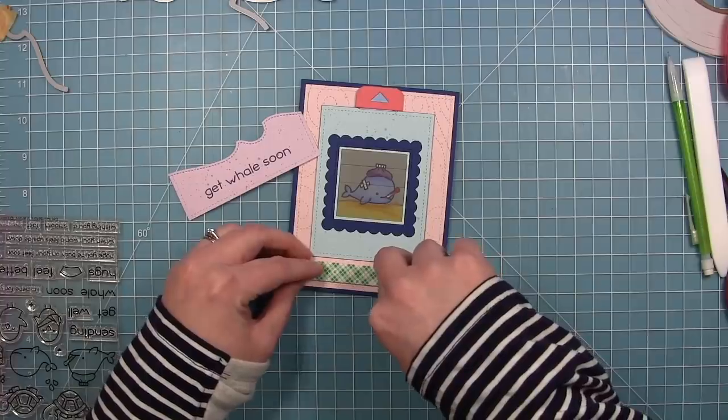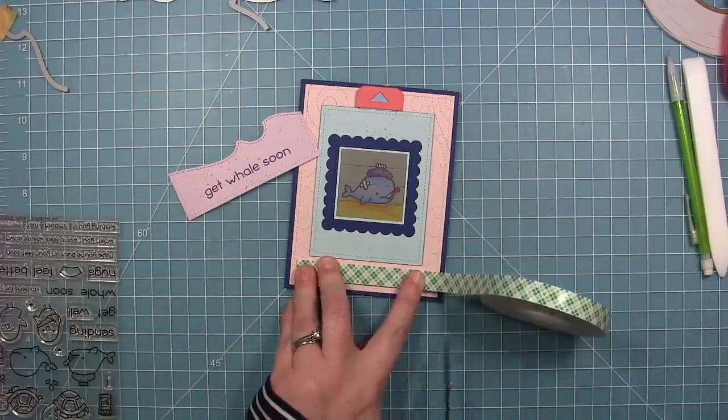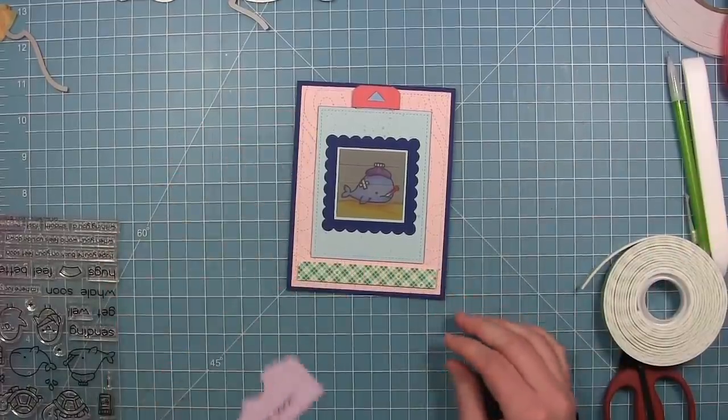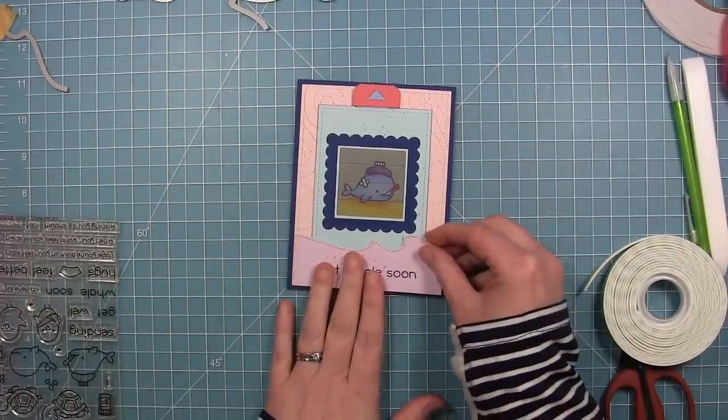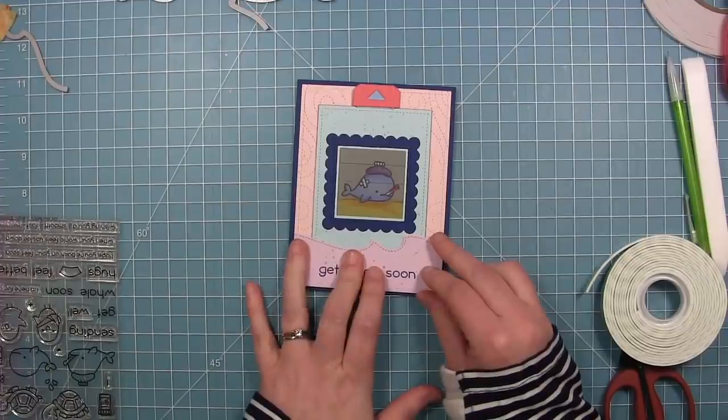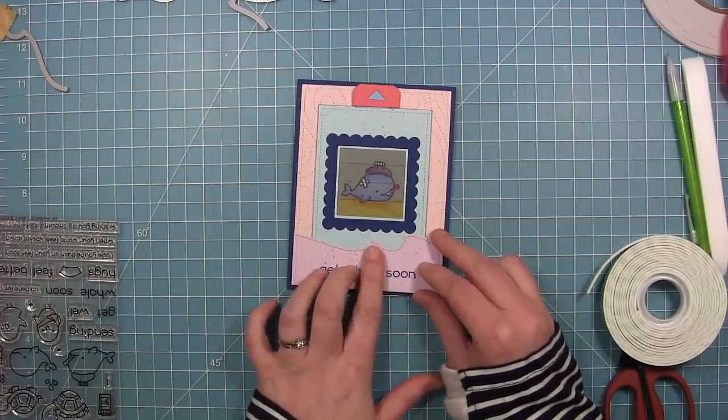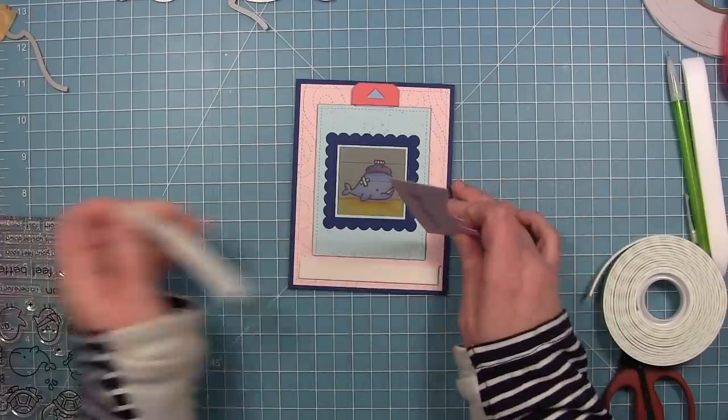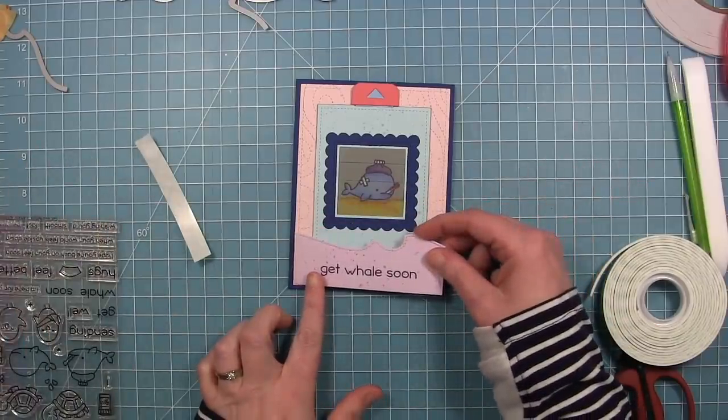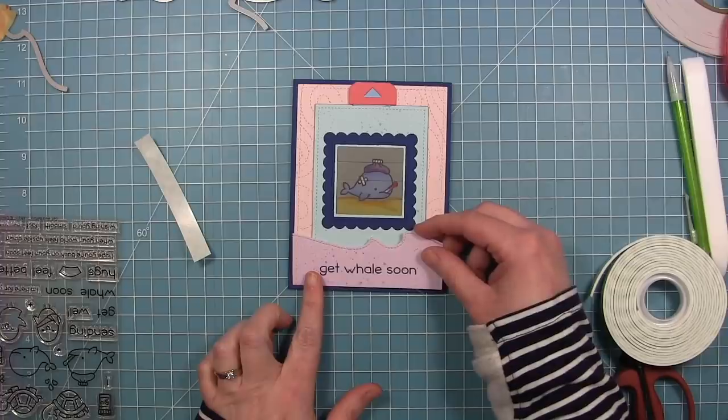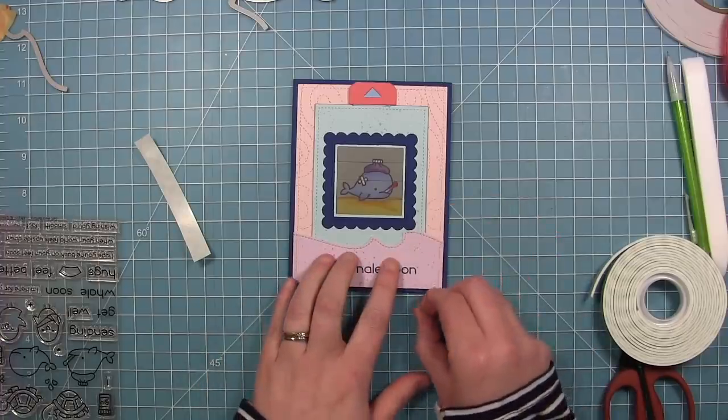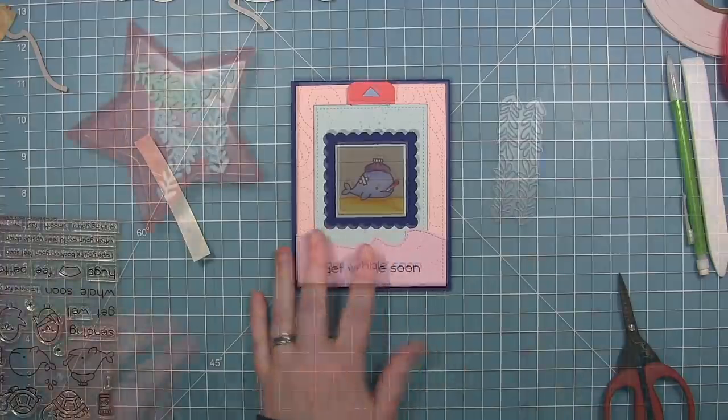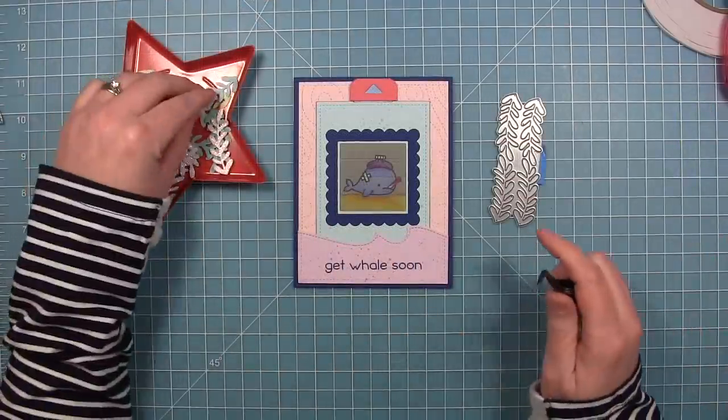And now to put it on my card base, since there's a lot of thickness to this Magic Picture Changer mechanism, because we've got three cardstocks plus some pattern paper, I'm putting a piece of foam tape across the bottom. This will just lift this piece up to where it's all nice and even with all that bulk of the Magic Picture Changer piece that is above it. So I'm just going to line that up with the pink panel so that we still have our border on the bottom.